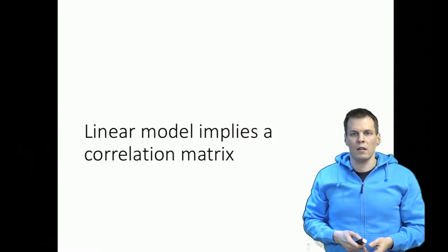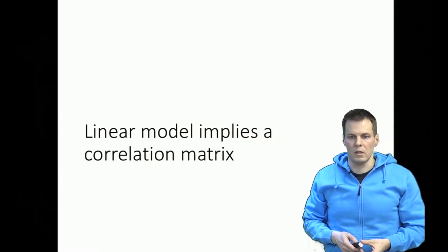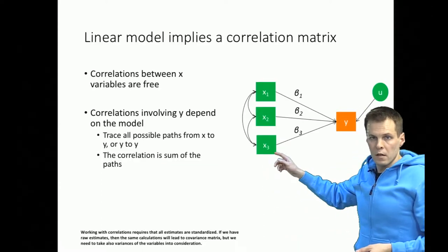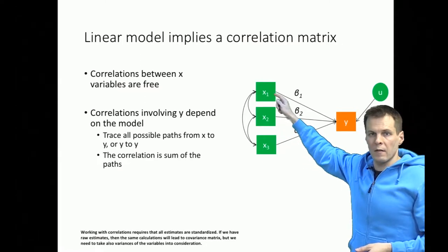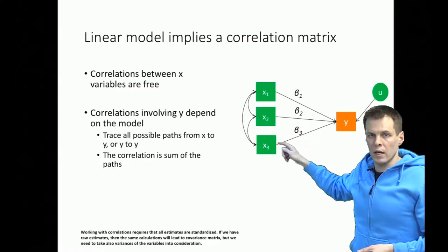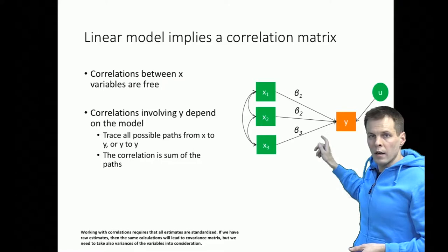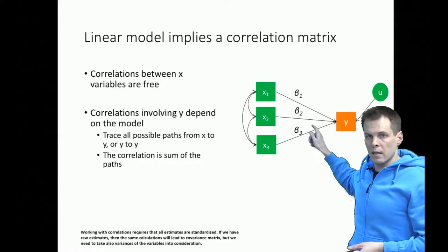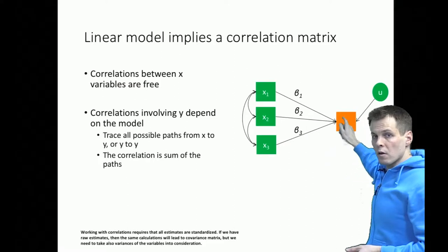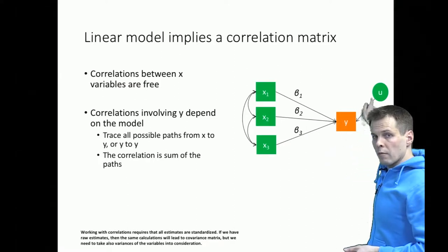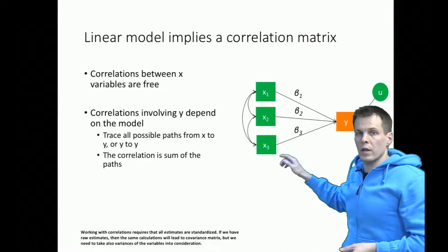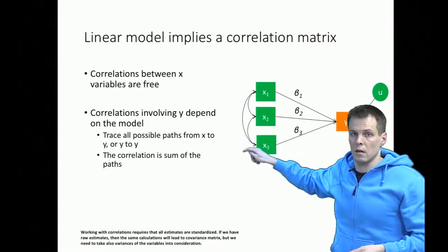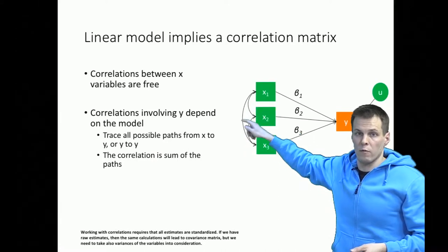So what does it mean that the linear model implies a correlation matrix? Let's take a look at this recursion model in path diagram form. We have three different independent variables x1, x2, and x3 linked to a dependent variable y with regression coefficients for these regression paths. Then we have some variation u — the error term that the model doesn't explain — and then we have these x's that are allowed to be freely correlated.